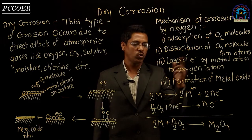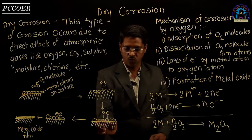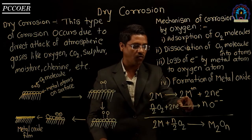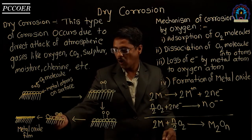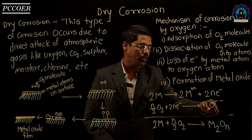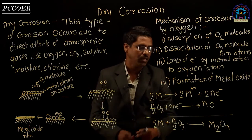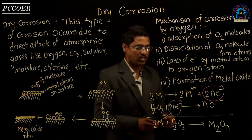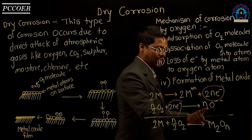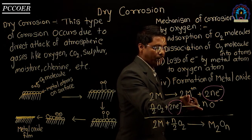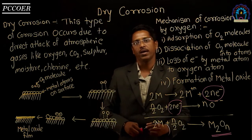Now we will see the overall mechanism of corrosion by oxygen. The metal loses electrons, forming positively charged metal ions. Oxygen takes those electrons, forming negatively charged oxide ions. The number of electrons in both cases cancels out as the same number are involved. The overall reaction is: 2M + (N/2)O₂ → 2Mⁿ⁺ + NOⁿ⁻, and the union of metal ions and oxide ions results in the formation of metal oxide. This completes the mechanism of dry corrosion.